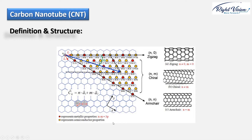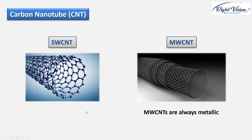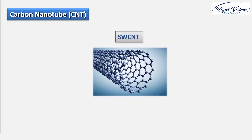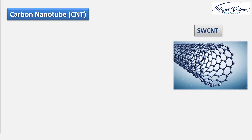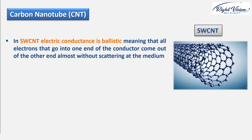When we say carbon nanotubes it usually refers to single-wall carbon nanotubes, but they can also be multi-walled carbon nanotubes. Multi-walled carbon nanotubes consist of several interlinked nanotubes with diameters reaching more than 100 nanometers, and their lengths can reach several micrometers or even millimeters. Multi-walled carbon nanotubes are always metallic. One interesting property of single-wall carbon nanotubes is that their electric conductance is ballistic — meaning all electrons that enter one end of the conductor come out the other end almost without scattering.